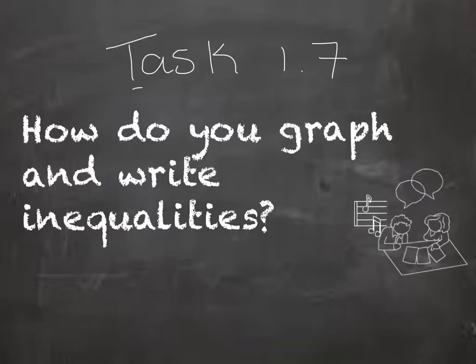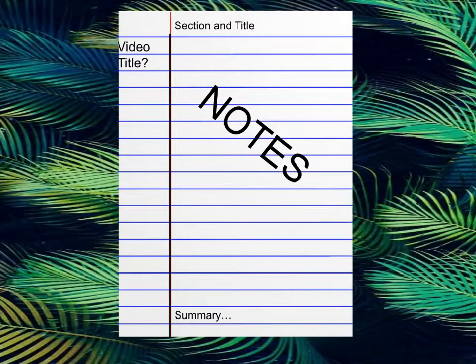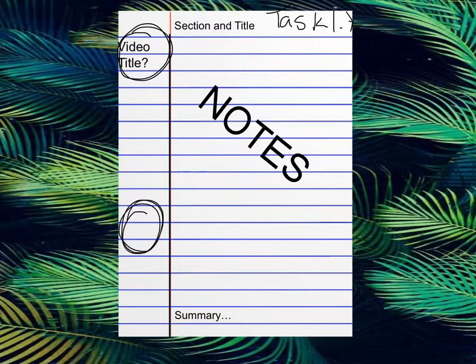Please make sure this goes at the top of your paper along with the task title. You can find it in your binder and this would be the video title that you would write on the left-hand column. Here's an example of how your notes should look like for this video. Just a reminder there are two videos for task 1.7, so you would put task 1.7 in the title up top. This is the video title that we're going over now, and then the second video title would go here, and you write your notes and summaries at the very end.